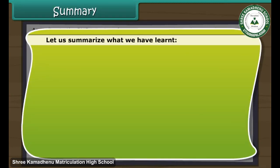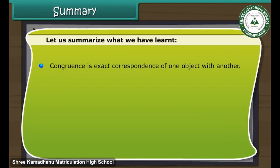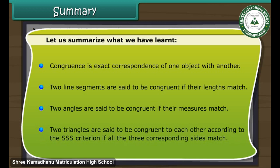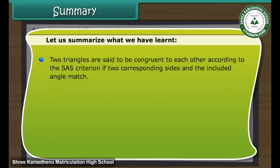Let us summarize what we have learned. Congruence is the exact correspondence of one object with another. Two line segments are said to be congruent if their lengths match. Two angles are said to be congruent if their measures match. Two triangles are said to be congruent according to the SSS criterion if all three corresponding sides match. Two triangles are said to be congruent according to the ASA criterion if two corresponding angles and the included side match.